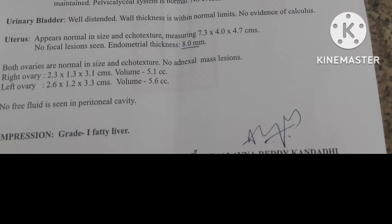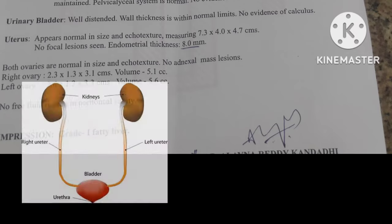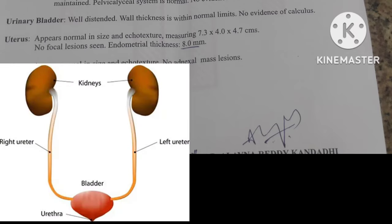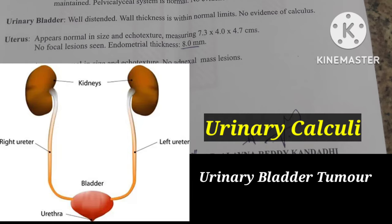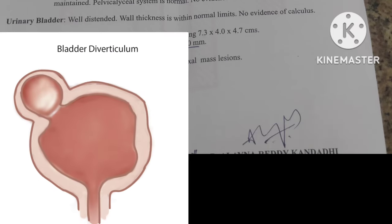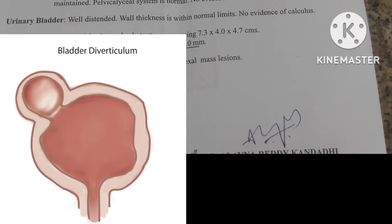Next comes the urinary bladder. If it is normal, they mention it as normal. If there are any stones or tumors, they will be mentioned. Another term seen in reports is bladder diverticula — a pouch-like structure seen in the urinary bladder.